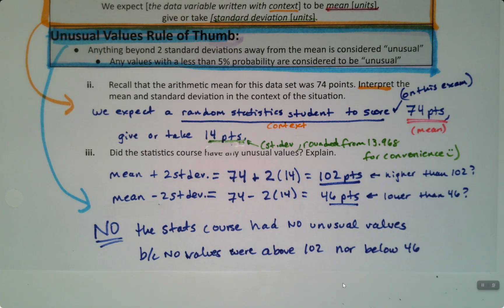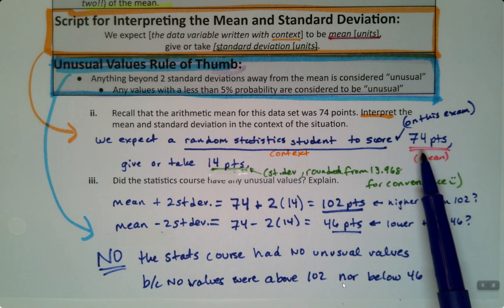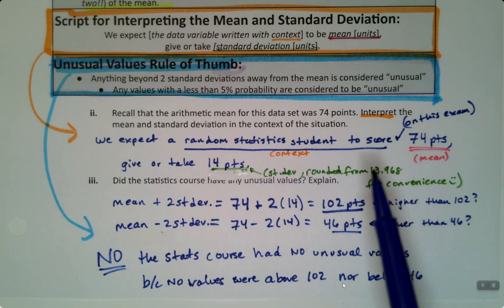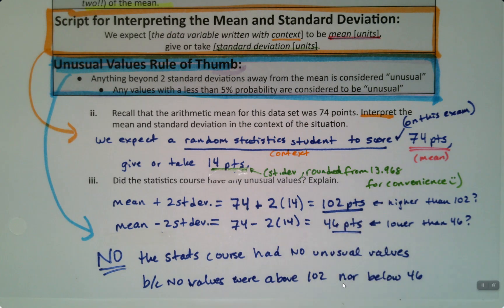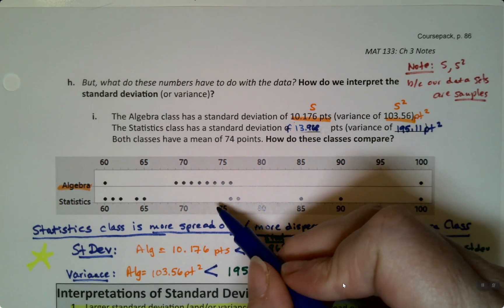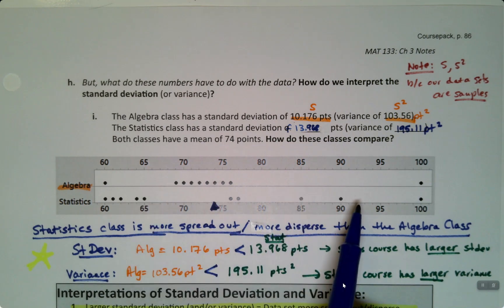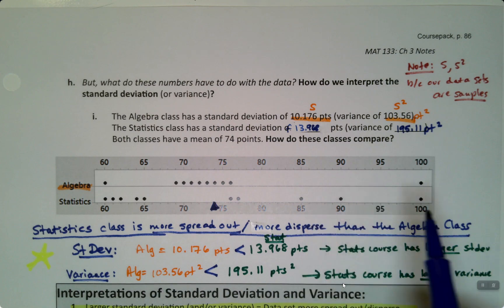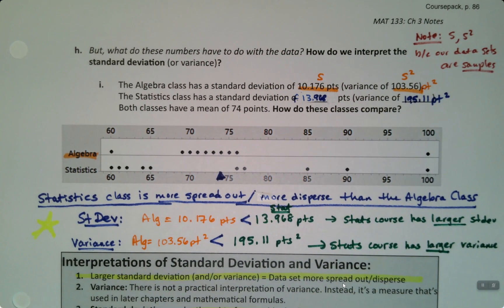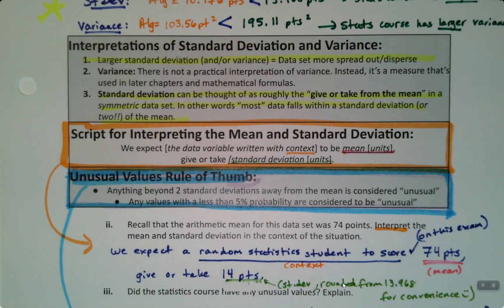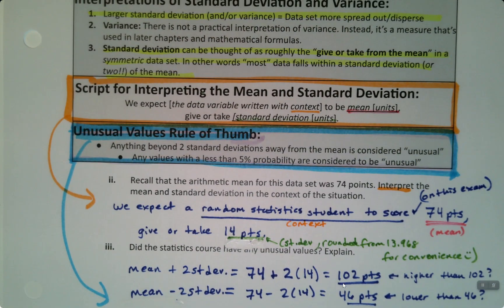And you always want to kind of keep this in your mind. This is where standard deviation is really powerful. Standard deviation is telling you, hey, you know, most of the time things are going to fall within one standard deviation. But anything past two standard deviations, that's unusual. Right. So it's giving you kind of a sense of the spread of the data with numbers. Right. So if you think back to your graph, we expect 74 because that's the mean, give or take 14. So most values fall in here. Right. And then anything past 102 or 46 would be unusual. That's what standard deviation does for you. It gives you that measure of how much spread there will be in a data set. Right. Exactly.